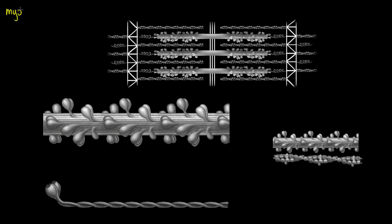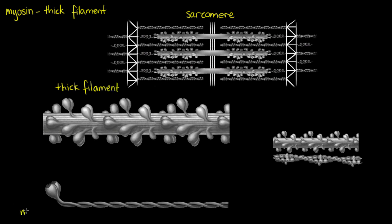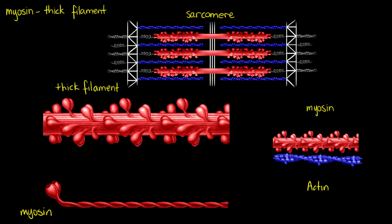Welcome to this tutorial on the thick filaments of skeletal muscle. We learned a little bit about thick filaments in our tutorial on sarcomeres, but didn't go too in depth with the structure. On screen we have a whole sarcomere, a thick filament, and individual myosin subunits that make up that thick filament. We also have a thick and thin filament together — the thick filament made of myosin and the thin filament made of actin. All thick filaments and myosin are coloured red, and all actin and thin filaments are in blue on the sarcomere.